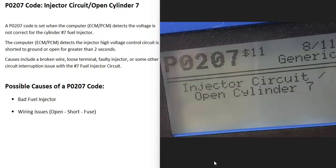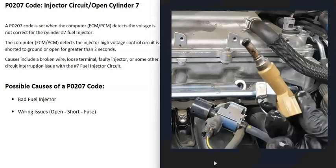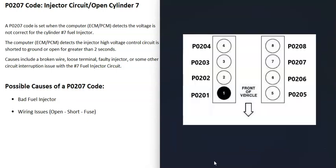So what is a P0207 code? It's an injector circuit open, cylinder 7. Basically, each cylinder on the engine has a fuel injector that injects fuel into that cylinder. When you get this P0207 code, the computer is seeing a problem with the cylinder 7 fuel injector. If you were to get a P0201, that would point to the number 1 cylinder; P0202 would point to number 2, and so on. So P0207 points to the number 7 cylinder.